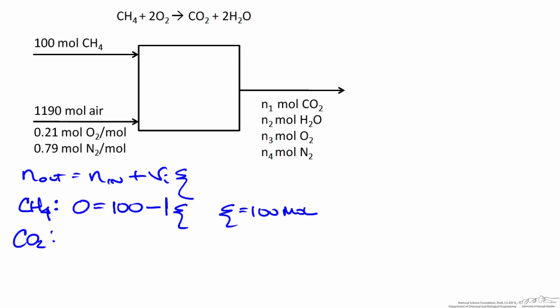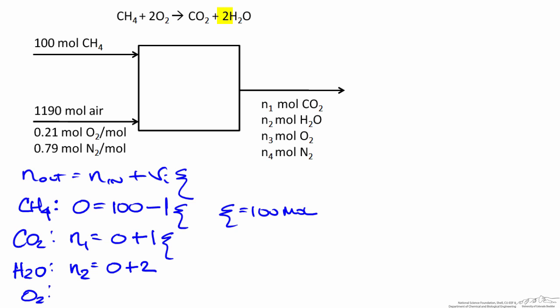Applying the balance to carbon dioxide: the amount leaving is N1, no CO2 enters the reactor, the stoichiometric coefficient is positive 1, multiplied by the extent of reaction. For water, the amount leaving is N2, no water enters, and we generate 2 moles of water per mole of methane reacted times the extent of reaction. For oxygen, the variable is N3; the input is 0.21 times 1,190 moles of air, with a stoichiometric coefficient of negative 2. Inserting 100 moles for the extent of reaction gives us the flow rates for CO2, H2O, and O2.